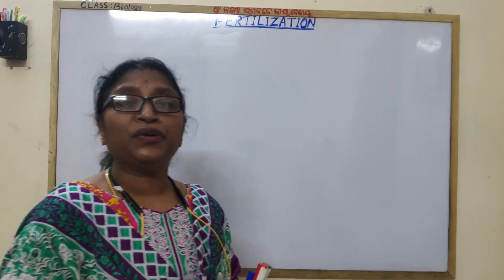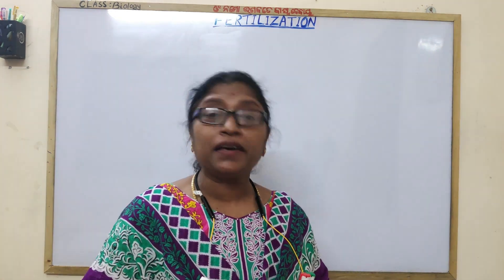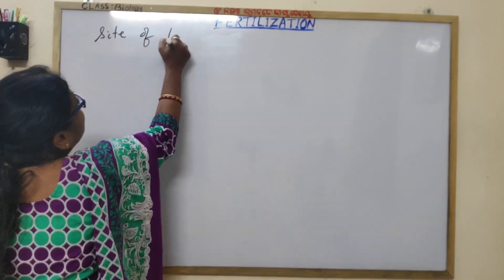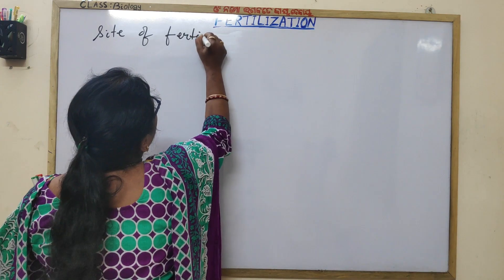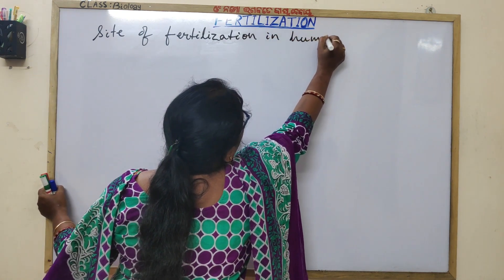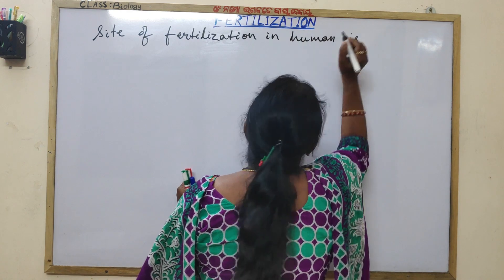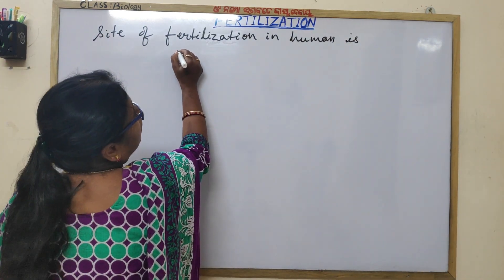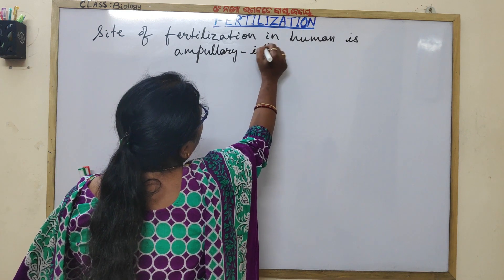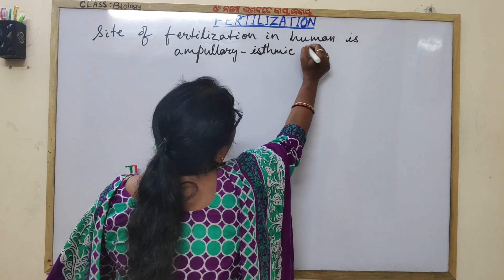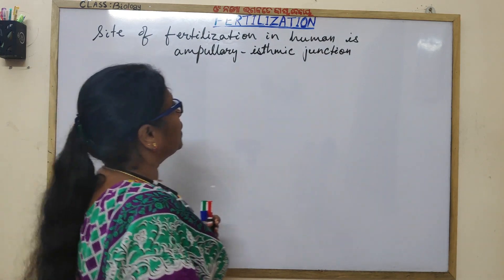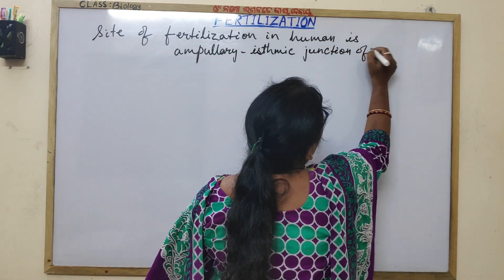The site of fertilization in humans is the ampullary-isthmic junction — the junction between the ampullary region and the isthmus of the fallopian tube.